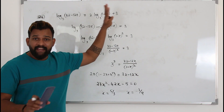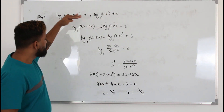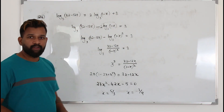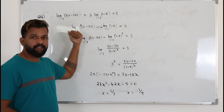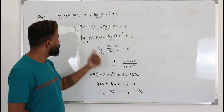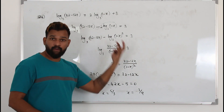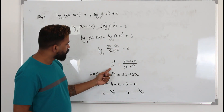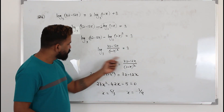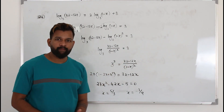For any equation involving logarithmic functions, these are the steps you need to follow. Step one: collect the logarithms to one side. Step two: combine into a single logarithm using laws of logarithms. Step three: rewrite using powers. Step four: frame a linear or quadratic equation and solve it.